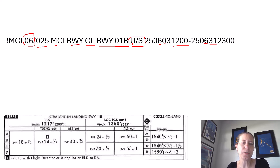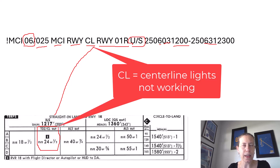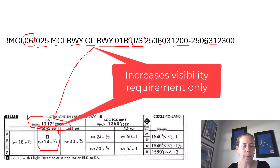So what does that do to me as a pilot or dispatcher? With the centerline lights out of service, if this were the only NOTAM related to this runway, then I could still fly the ILS but I would be limited by the touchdown zone centerline lights being out of service. It does not change my decision altitude at all — it's still 1,217 feet MSL — but it does move up my visibility requirement to RVR 2,400 or half a mile.